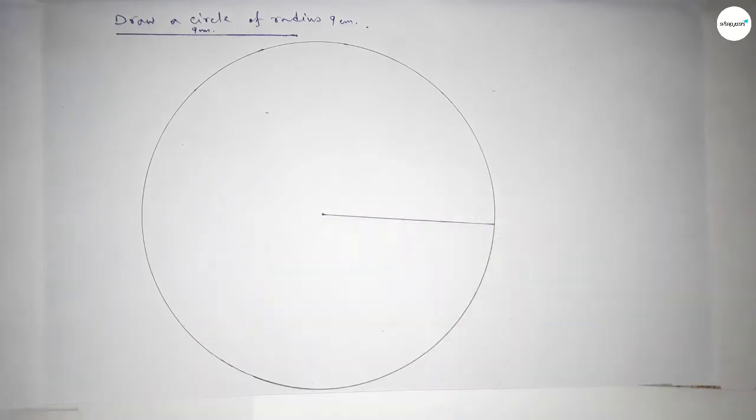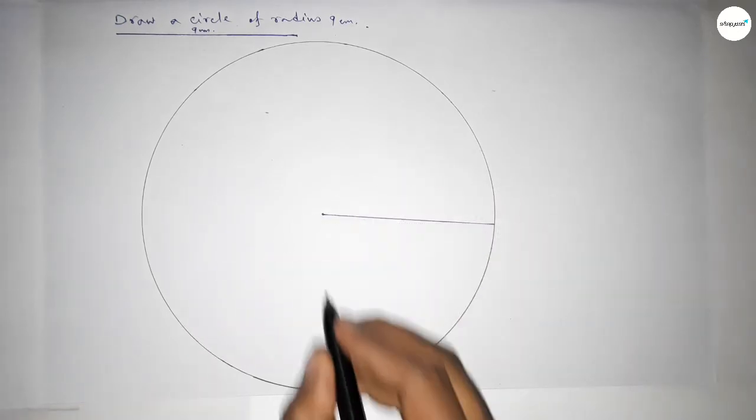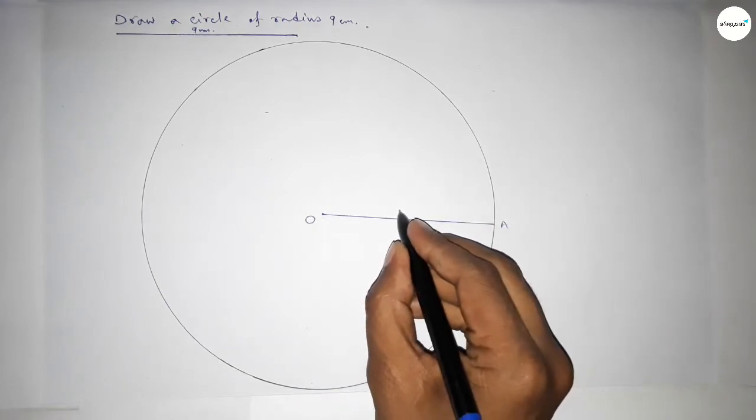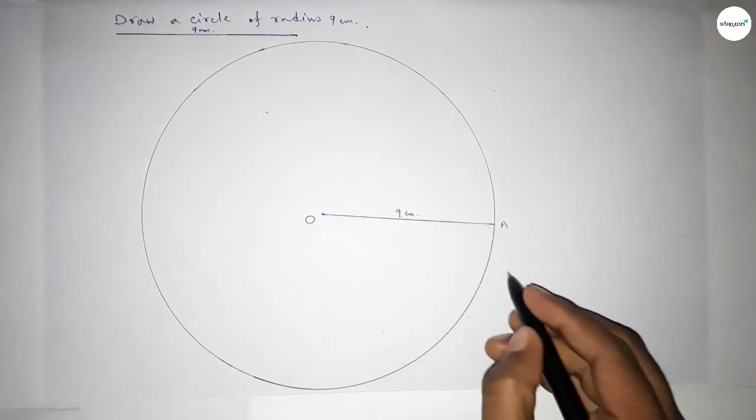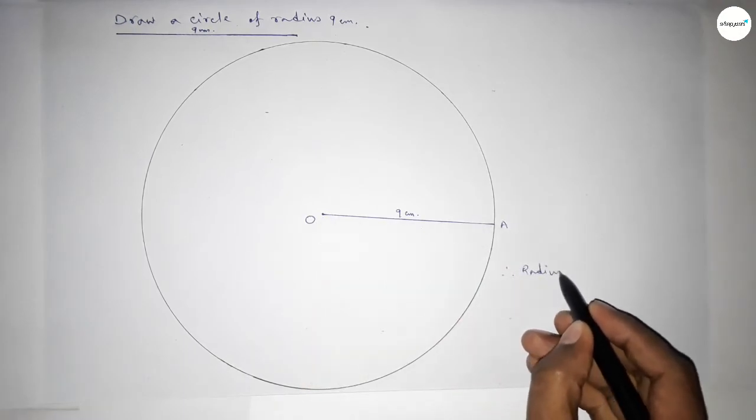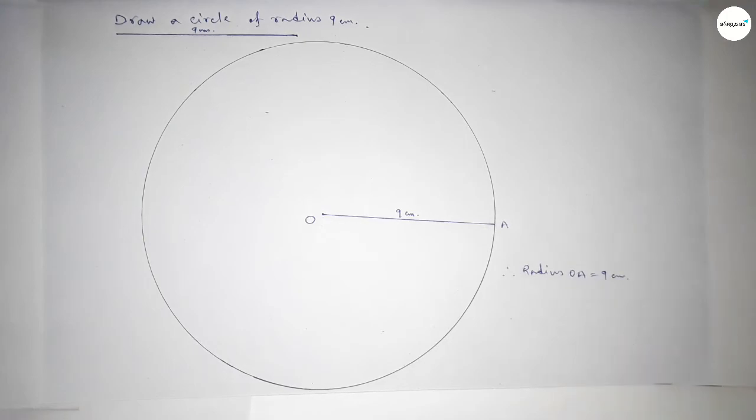So now taking the center of the circle here O and here A, so OA equal to 9 centimeter. Therefore radius OA, radius OA equal to 9 centimeter.